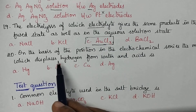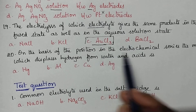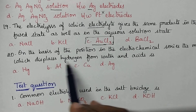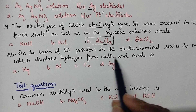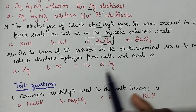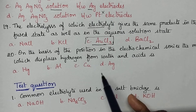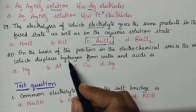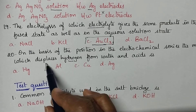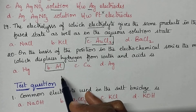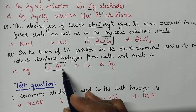On the basis of position in the electrochemical series, the metal which displaces hydrogen from water and acids — from the electrochemical series, if a metal is present above hydrogen it can replace hydrogen from acids and water. Aluminium is the right option.